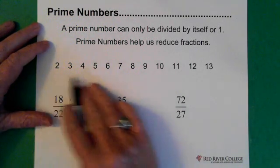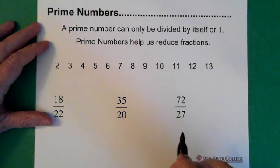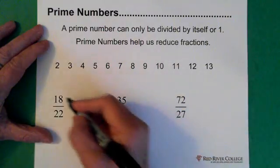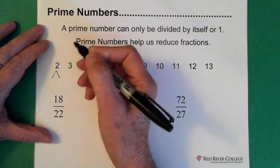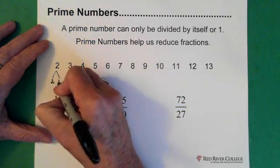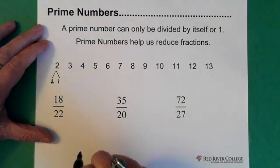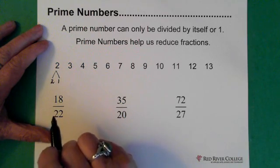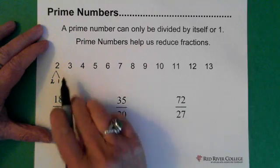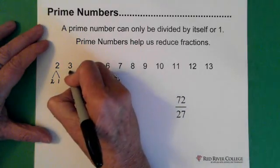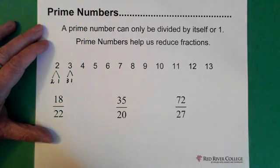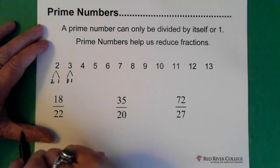Let's look at these first few numbers and determine which ones are prime. Two — when we multiply two numbers together to get two, they're two and one. So that's a prime number because the only thing two is divisible by is two and one. Three is the same — the only way we can get three is by taking three and multiplying it by one. So three is also a prime number.